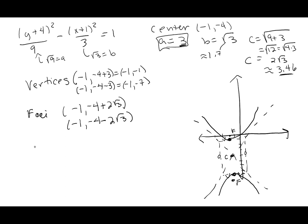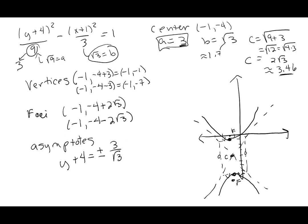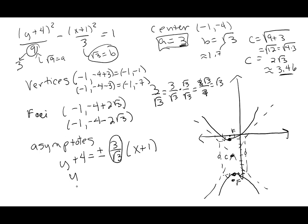For the asymptotes: y + 4 = ±(a/b)(x + 1). We went up/down by 3 (from under y) and across by √3 (from under x), giving 3/√3. Rationalizing: multiply by √3/√3 to get 3√3/3 = √3. So the asymptote equations are y + 4 = ±√3 · (x + 1).